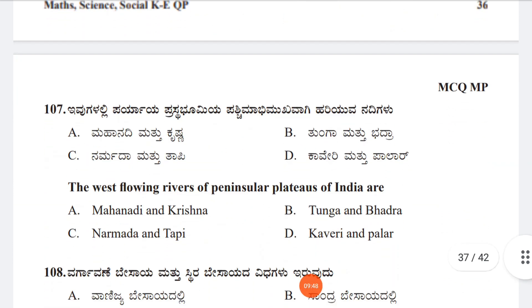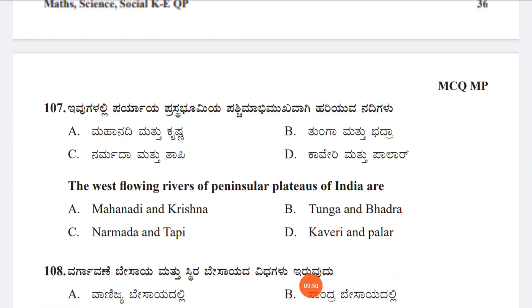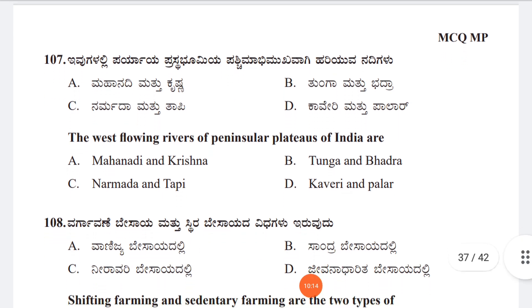Question 107: The west-flowing rivers of the peninsular plateau of India are Option A: Mahanadi and Krishna, Option B: Tunga and Bhadra, Option C: Narmada and Tapi (also called Tapati), Option D: Kaveri and Palar. The correct answer is Option C, Narmada and Tapi.